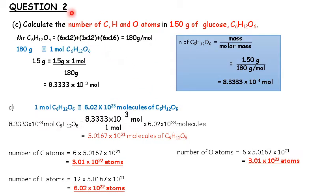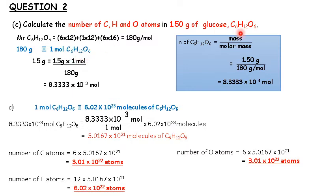Next, Question 2C: Calculate the number of carbon, hydrogen, and oxygen atoms in 1.5 grams of glucose, C₆H₁₂O₆. This question is similar to Question B. First, we need to find the number of moles of glucose. The molar mass of glucose is 180 grams per mole, so 1 mole of glucose equals 180 grams. For 1.5 grams: 1.5 times 1 divided by 180 grams equals 8.3333 times 10⁻³ moles of glucose.